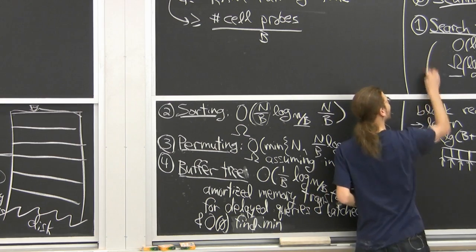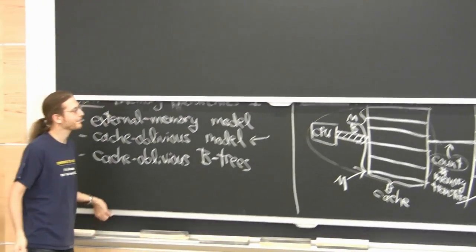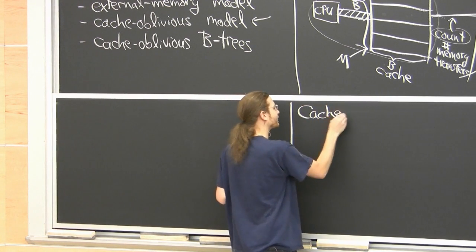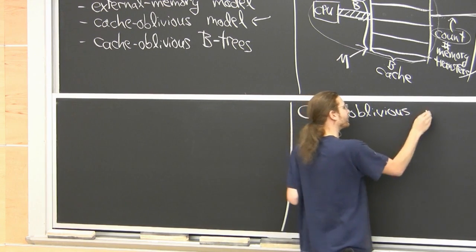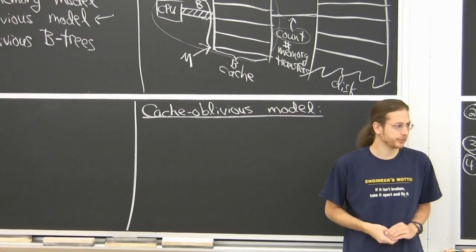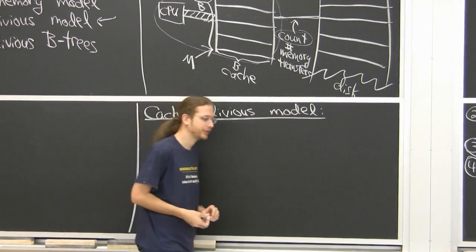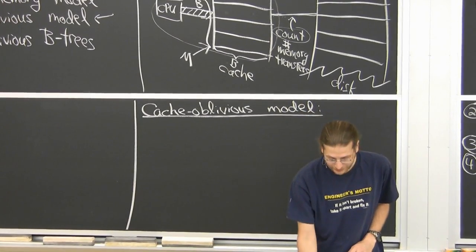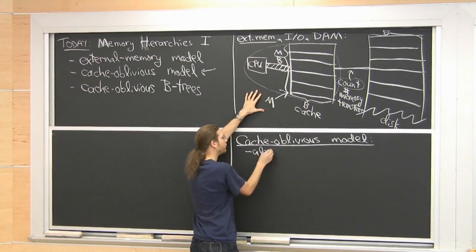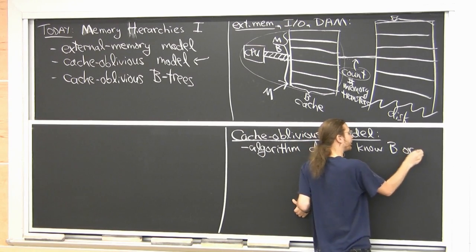Today's lecture is actually about B-trees in another model: the cache-oblivious model. The cache-oblivious model is much newer — from 1999, from MIT. Charles Leiserson and his students invented it in the context of 6.046. It's almost the same as the external memory model, with one change: the algorithm doesn't know what B or M is.